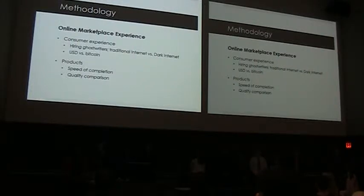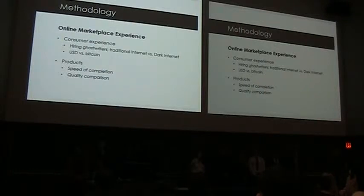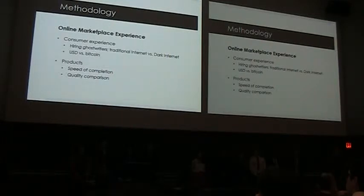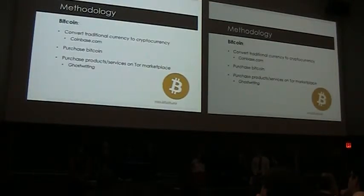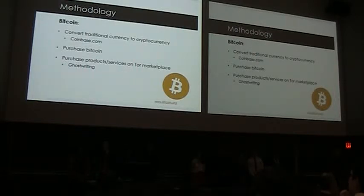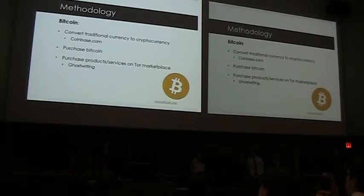The first portion of our methodology consists of documenting firsthand the experience of an actual dark internet marketplace user. Specifically, we will be hiring ghostwriters to write a paper based on a prompt given to us by the University of Maryland English Department. These purchases will be made on both the traditional internet and the dark internet, with payments conducted through US dollars and Bitcoin. We will then see if these factors affect the speed or final quality of the product. Bitcoin is very important to our study due to its widespread use on the dark internet. It can be obtained by going to a site such as Coinbase.com and using traditional currency to convert to cryptocurrency, which can then be used on several dark internet marketplaces with increased anonymity.